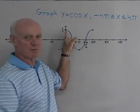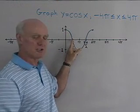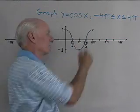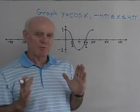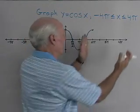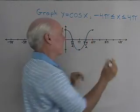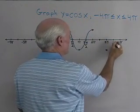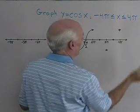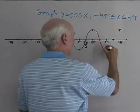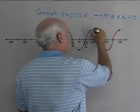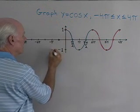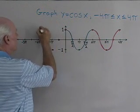Remember the graph starts at y equal one when x is zero, drops down to zero when x is pi over two, then negative one, back up to zero, and back up to one. That's one complete cycle, and it repeats every two pi units. So from two pi to four pi, I start at one, drop to zero, reach negative one at three pi, back to zero, and end at one at four pi. Then on the negative side I'll have the same pattern — starting at one, dropping to zero, negative one, back to zero, and back to one.